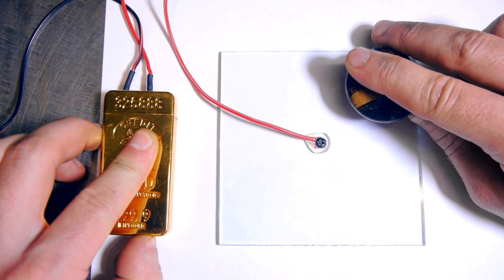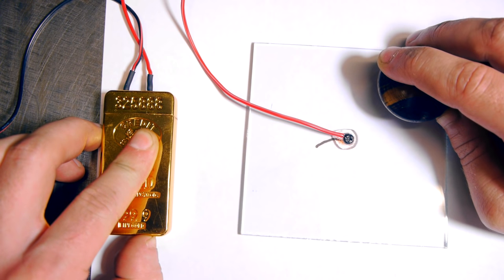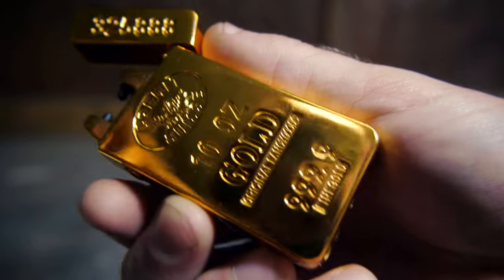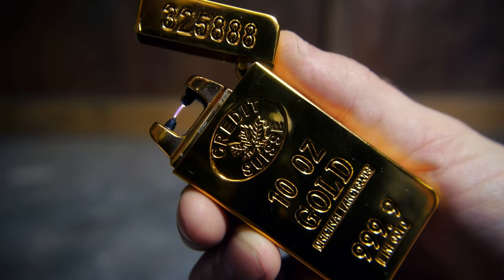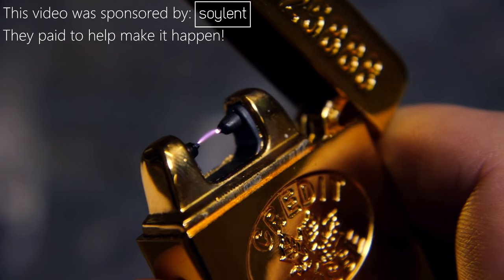Hello everyone, in this video I'll be showing how you can make a mini plasma cutter from an arc lighter. These lighters have just recently started to gain popularity, and they work by generating a high voltage arc between two exposed electrodes.